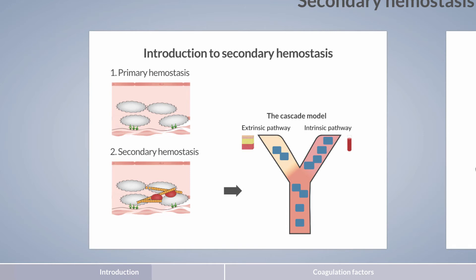The cascade model is comprised of two arms that converge to form the final common pathway. This structure has proven especially useful in understanding coagulation tests. However, for explaining the coagulation process in the body, the cascade model is less suitable.